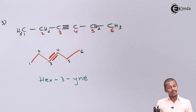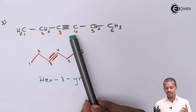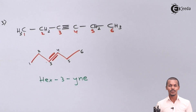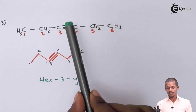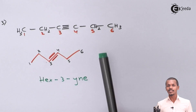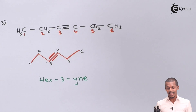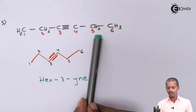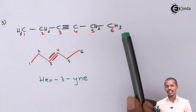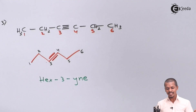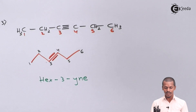This is the third isomer. A fourth isomer with the triple bond between C4 and C5 would be the same as hex-2-yne because the numbering would start from the other end. So the next isomer will be a branched chain — five carbon atoms in a straight chain with one branching carbon.